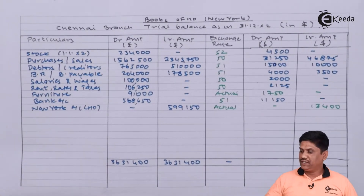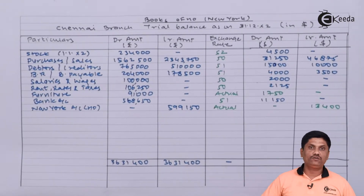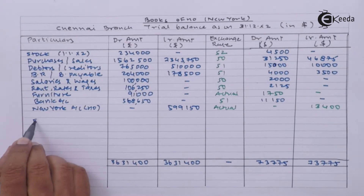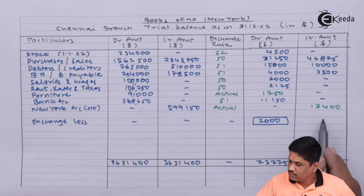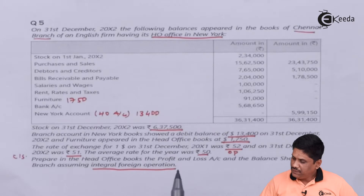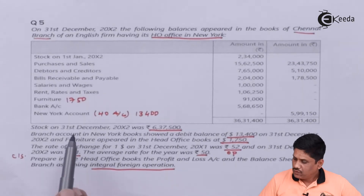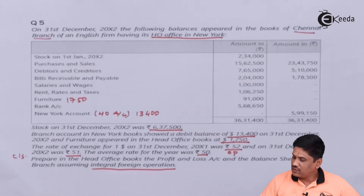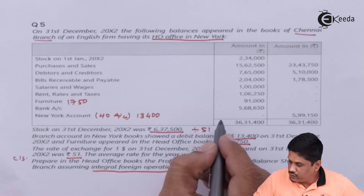The total credit side is 73,775 and the debit side total is 71,775. The credit side total is heavier, so there is an exchange loss of 2,000 dollars. This will be debited in the branch profit and loss account. The question asked us to prepare in the head office book the profit and loss account and balance sheet of the branch. For adjustment, stock on 31st December X2 was rupees 6,37,500. To convert this into dollars, we apply the closing rate of 51, so 6,37,500 divided by 51 equals 12,500 dollars.